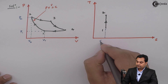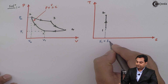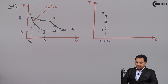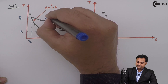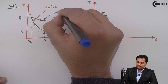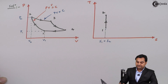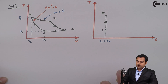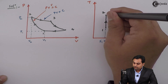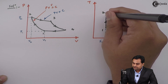Process 1 to 2 is isentropic compression, so entropy remains constant: S1 = S2. Process 2 to 3 is isothermal heat addition, following the law PV = constant, meaning temperature remains constant from point 2 to point 3: T2 = T3.